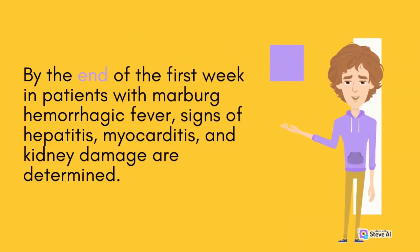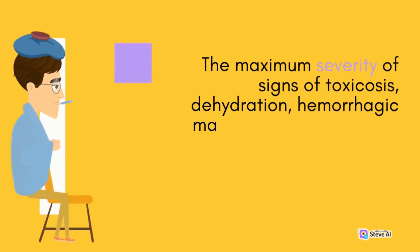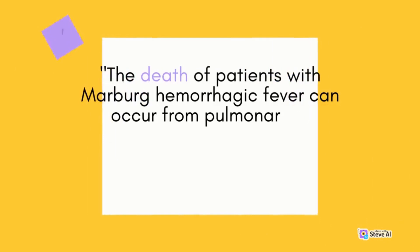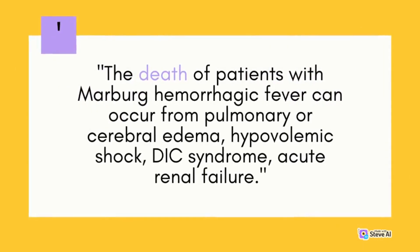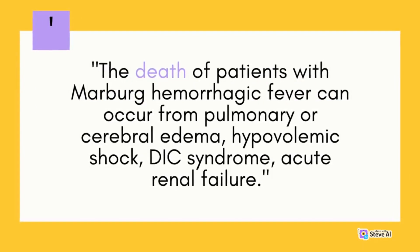By the end of the first week, signs of hepatitis, myocarditis, and kidney damage are determined. Changes in the central nervous system are characterized by adynamia, lethargy, convulsions, and loss of consciousness. The maximum severity of toxicosis, dehydration, hemorrhagic manifestations, and multi-organ disorders is reached in the second week. Death can occur from pulmonary or cerebral edema, hypovolemic shock, DIC syndrome, or acute renal failure.